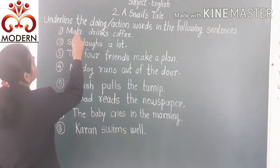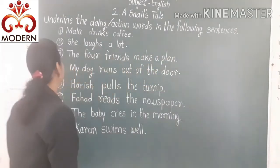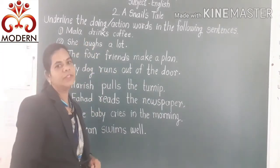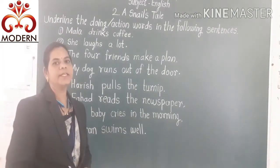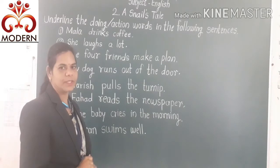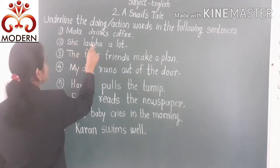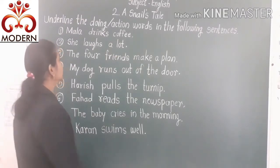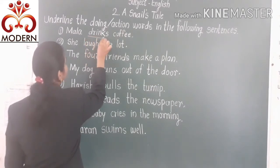Students, underline the doing words — action words — in the following sentences. We are given some sentences that contain doing words, and we will find and underline them. Our first sentence is: Mala drinks coffee. In this sentence, 'drinks' is an action word, so underline it.